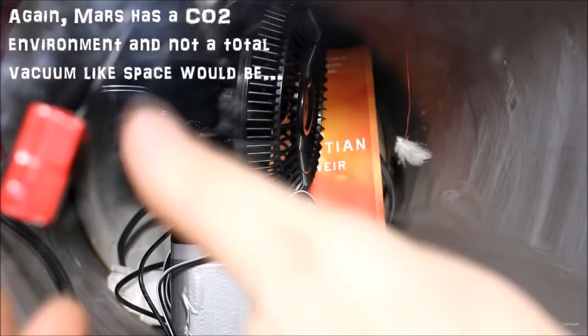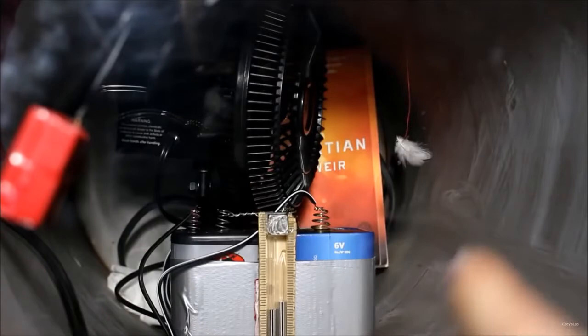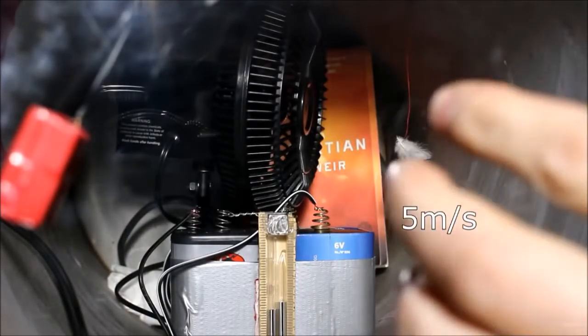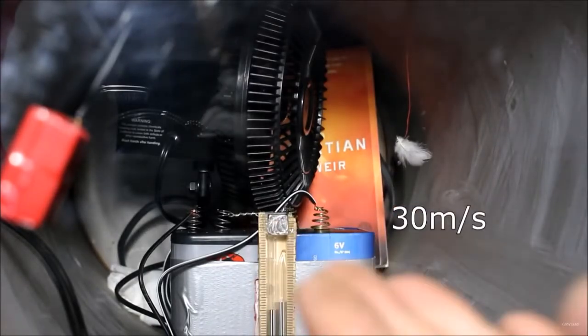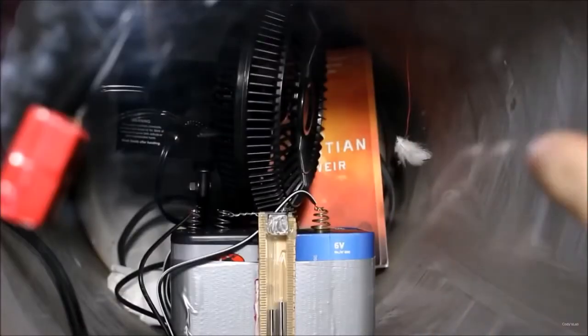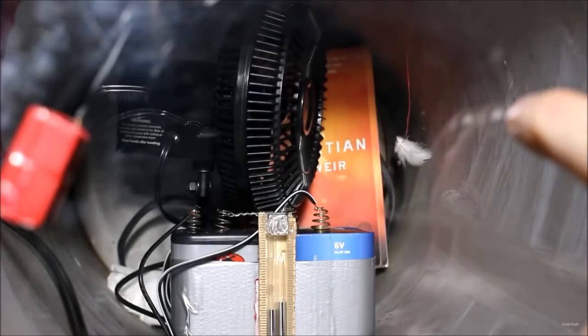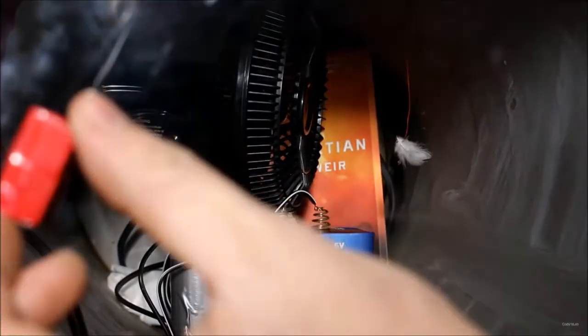And let's turn on this fan. Place your bets as to what's going to happen to this feather. Now the fan is only going to produce maybe 10 miles per hour worth of wind. On the surface of Mars, the fastest recorded wind speed is about 70 miles an hour. But let's say the superstorm in The Martian had wind speeds of 200 miles an hour, 20 times what we have here. To compensate for that, I imagine the feather is about 20 times easier to push over than a spaceship. So let's see what happens.